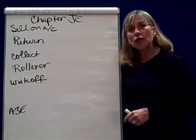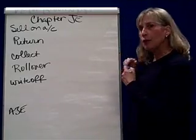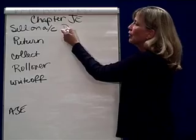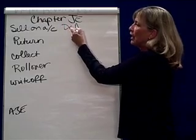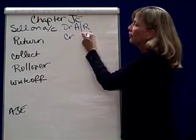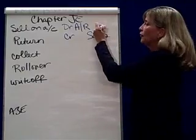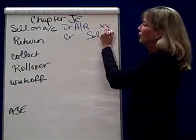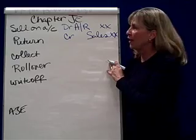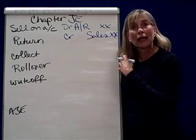The first one is: how do you sell on account? When we sell on account, we're going to be debiting accounts receivable and crediting sales for however much it was that we sold. So debit accounts receivable, credit sales — that's when we sell on account.